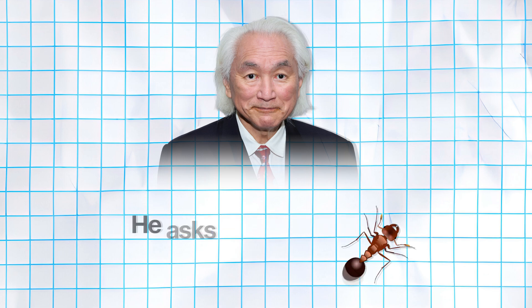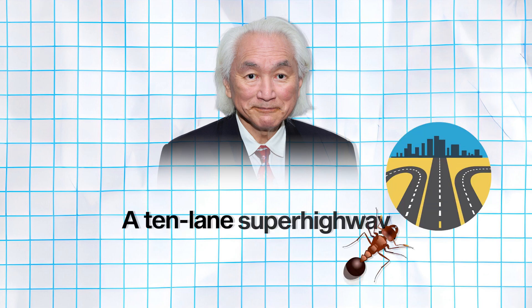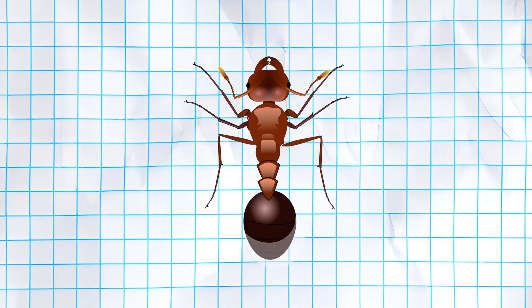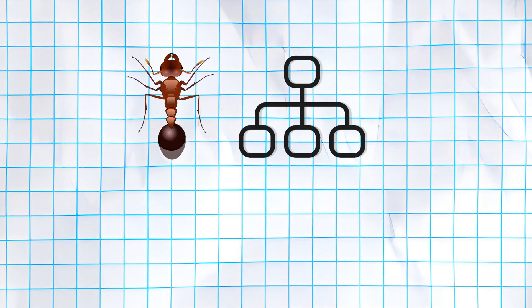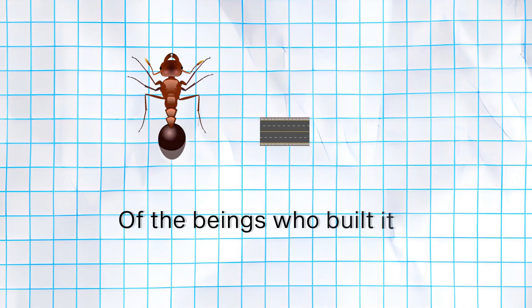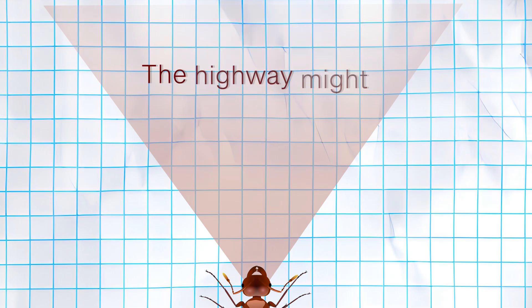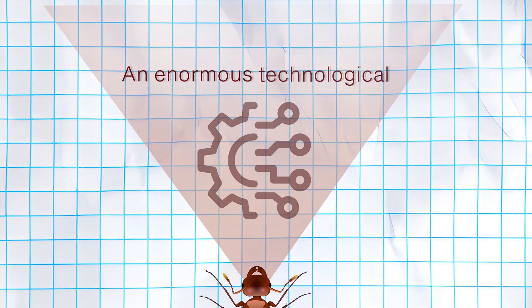He asks us to consider ants encountering a 10-lane superhighway. The ants cannot comprehend what the highway is, understand the technology behind its construction, or grasp the intentions of the beings who built it. From the ants' perspective, the highway might as well not exist, even though it represents an enormous technological achievement.